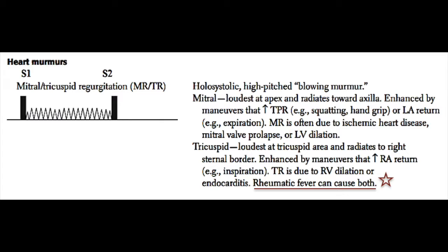Mitral regurgitation is often due to ischemic heart disease, mitral valve prolapse, or left ventricular dilatation. Tricuspid valve regurgitation occurs loudest at the tricuspid area and it radiates to the right sternal border. Tricuspid regurgitation is enhanced by maneuvers that increase right atrial return, such as inspiration, so it is a murmur that you can change based on the patient's breathing cycle. TR is generally due to right ventricular dilatation or bacterial endocarditis. Rheumatic fever can cause both tricuspid regurgitation and mitral valve regurgitation.